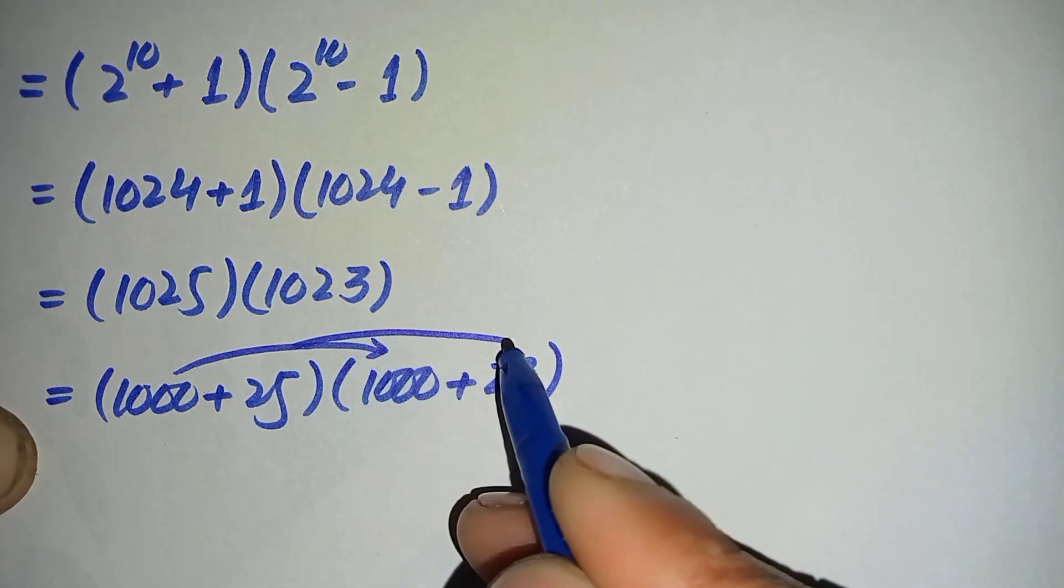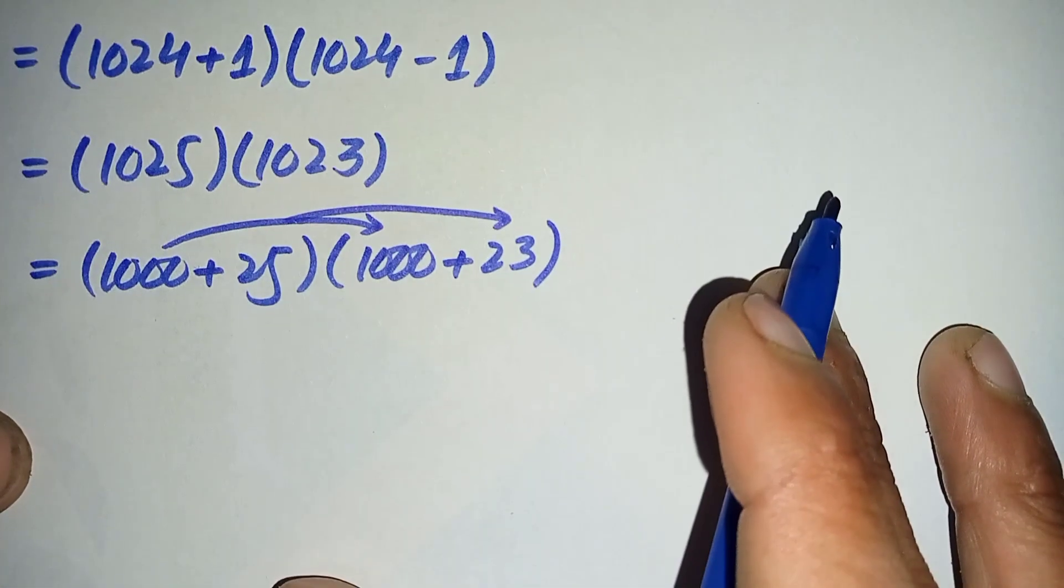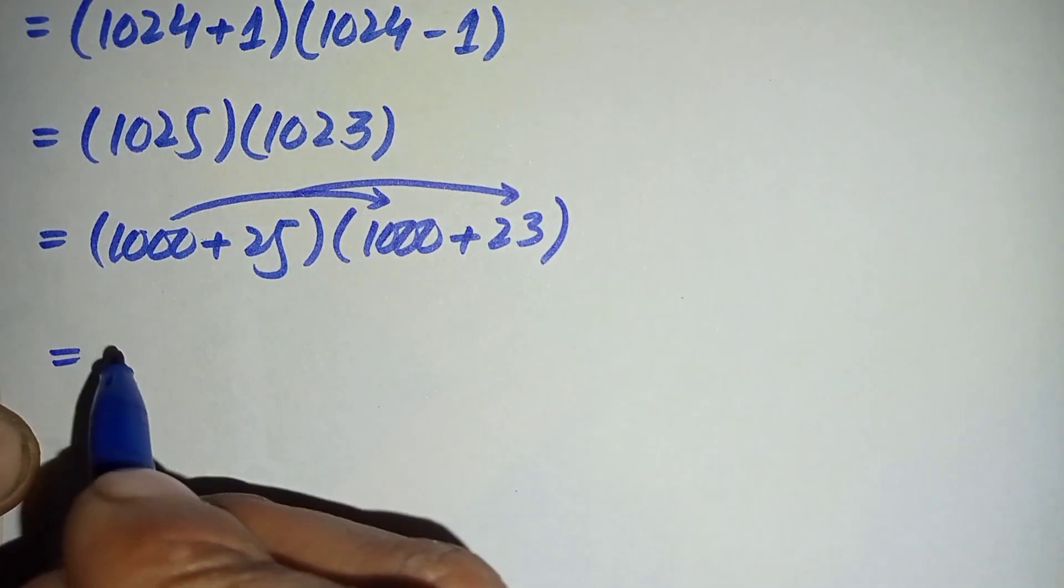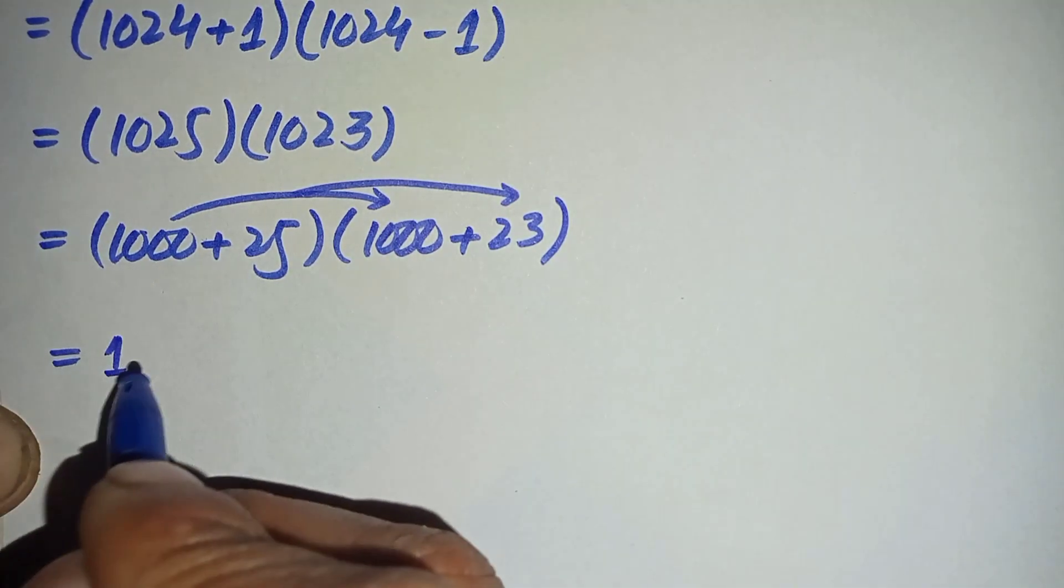Now here first we will multiply this 1000 with these two numbers. So it will become 1000 times 1000 is 1 million, plus 1000 times 23 is 23,000.